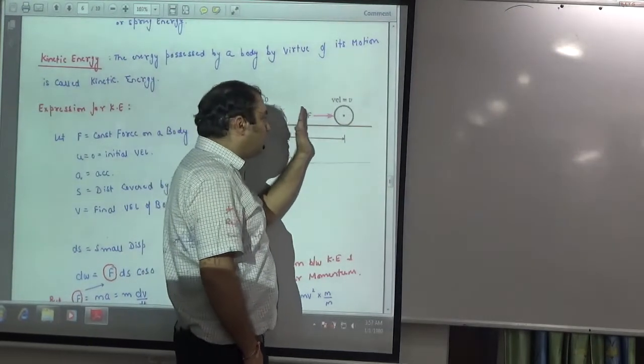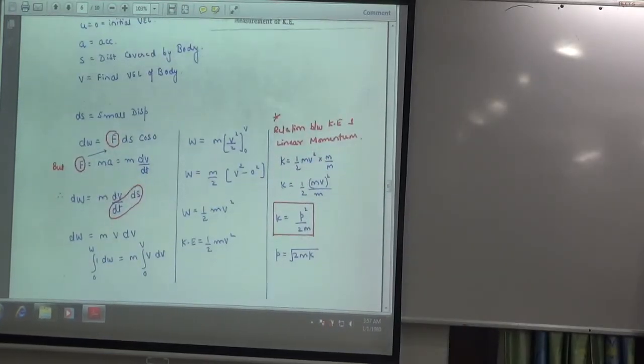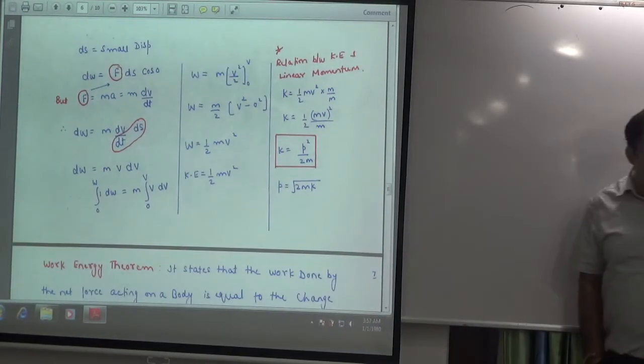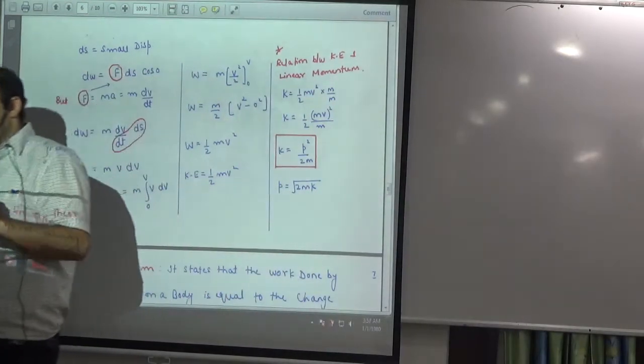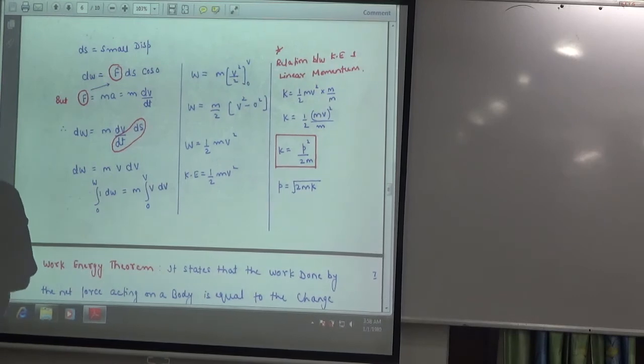So you have to do what we should do. Imagine that this body covers small amounts of displacement: DS, DS, DS. So what do we do? First we will take small amount of work done and then we will take total amount of work done to see what we have done with velocity V.